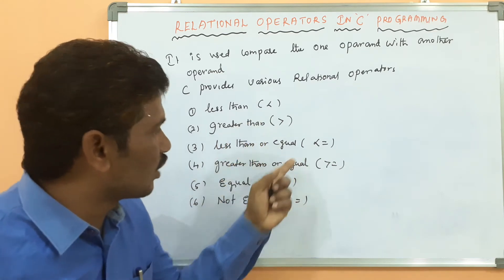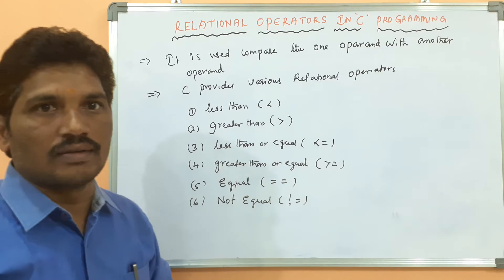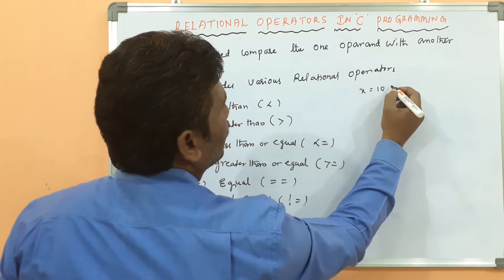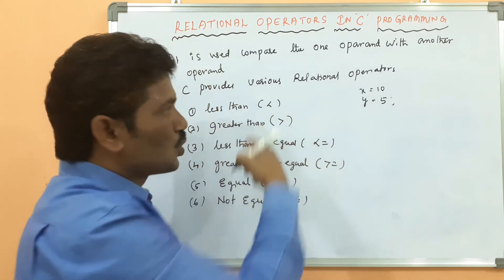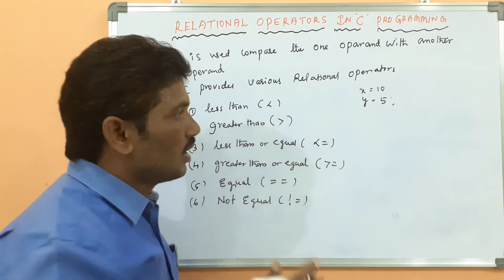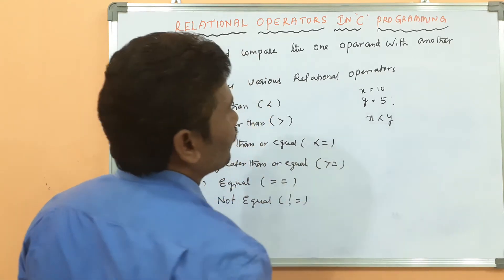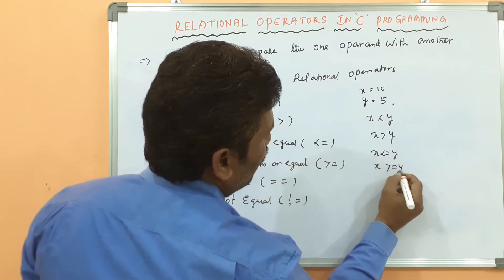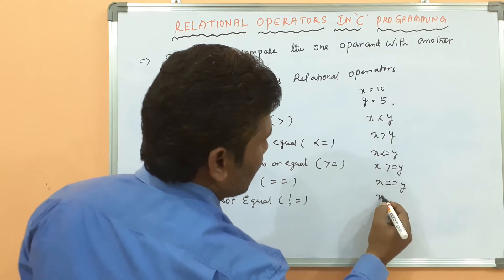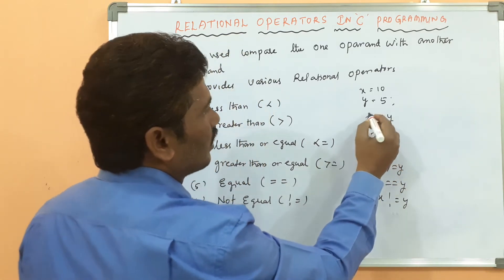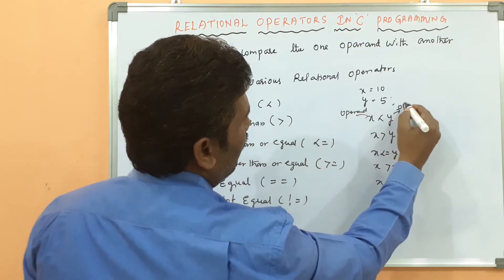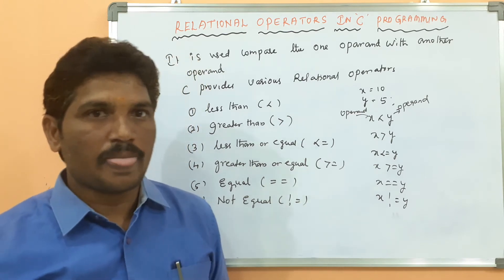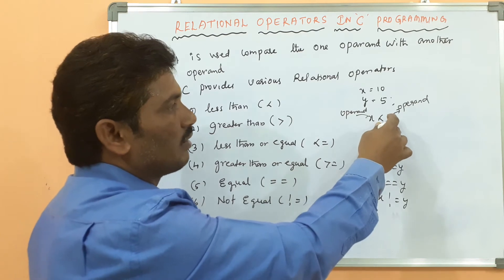The relational operators are: less than, greater than, less than or equal, greater than or equal, equal, and not equal. For example, x value is 10 and y value is 5. We compare one operand with another operand: x less than y, x greater than y, x less than or equal to y, x greater than or equal to y, x equal to y, x not equal to y. Here x is the operand compared with the y operand.